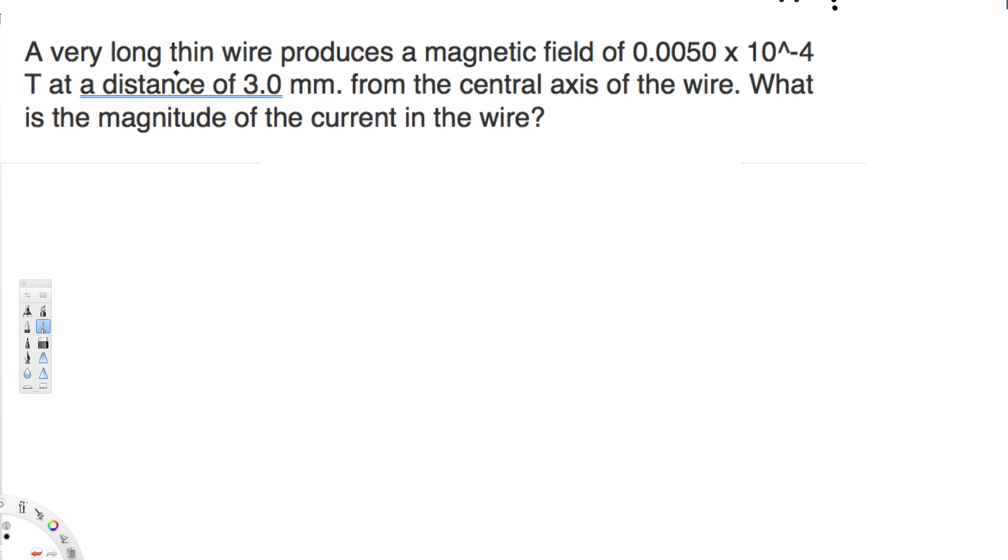This is a very long thin wire, so it means it's an infinite wire. In an infinite wire we can use this magnetic field equation: B = μ₀I / 2πR. But here the question is asking us to find the current, so we have to rearrange this equation.